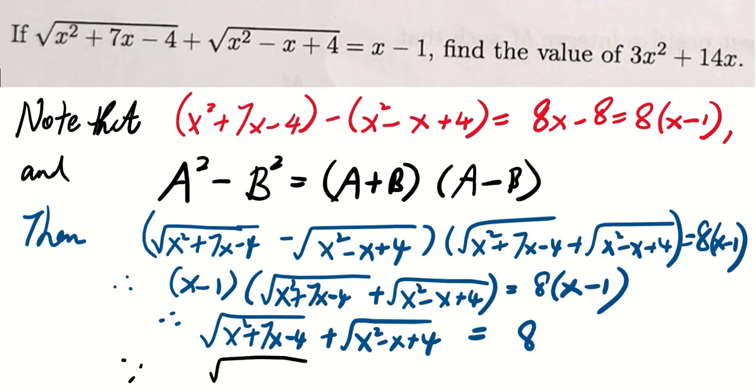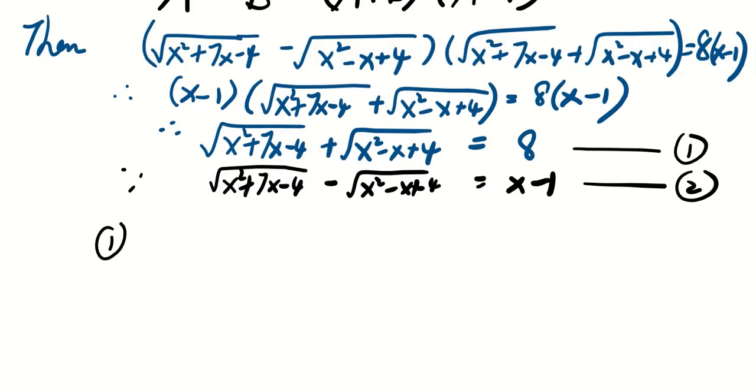Now, together with the condition that square root of x squared plus 7x minus 4 plus square root of x squared minus x plus 4 equals to x minus 1, we can add these two equations, and this will give us 2 times square root of x squared plus 7x minus 4 equals to x plus 7.